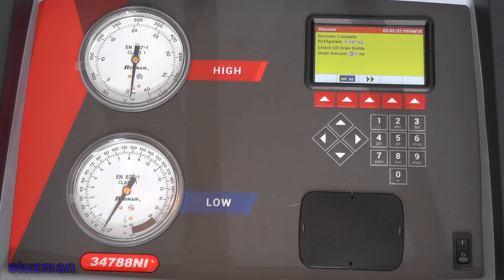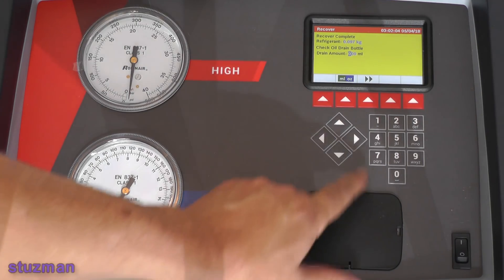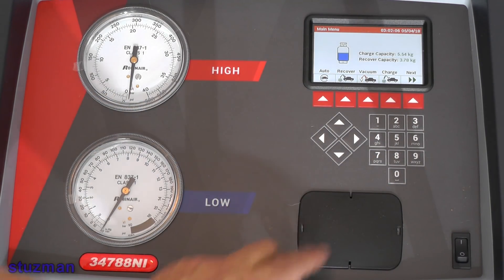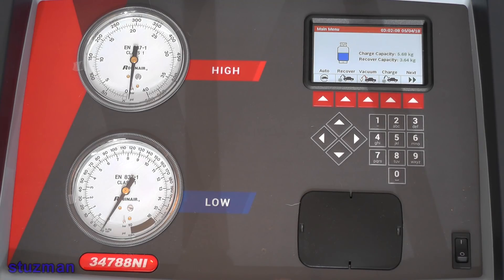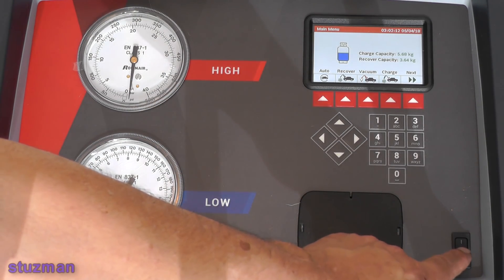So it looks like right now we have 0.097 kilograms refrigerant recovered. So we had a big leak here. I think it's supposed to be 0.676 kilograms, and we didn't get any oil drained out. That puts us back to our main menu. At this point right now I'm just going to turn the machine off.